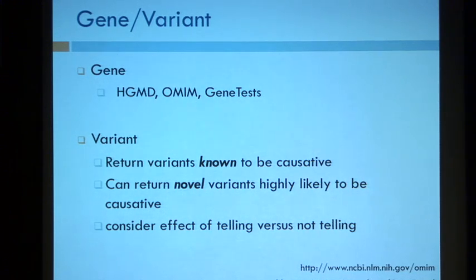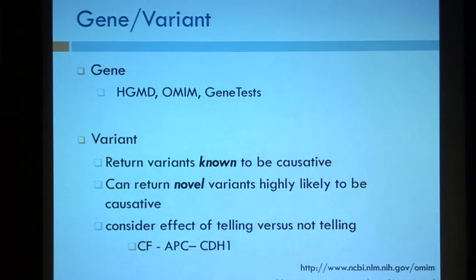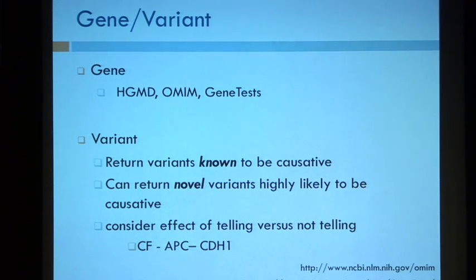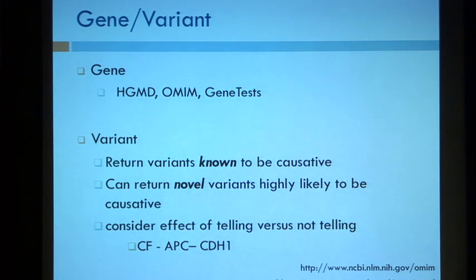You should consider the effect of telling versus not telling. If you have variants where you're not 100 percent certain they cause disease — if it's a carrier variant, that's one set of things your program has to think about. If it's a variant in CDH1 that causes stomach cancer and the only thing they can do is have their stomach removed, you better be 100 percent sure that variant is causative before you return it to your proband.